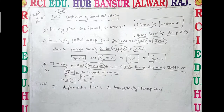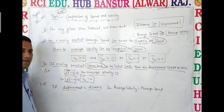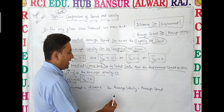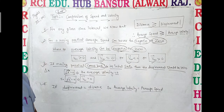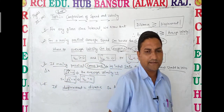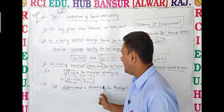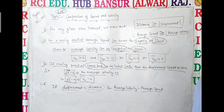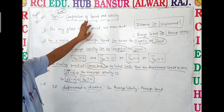Fourth point: if displacement is equal to distance, then average velocity and average speed will be equal. This occurs in straight-line motion, where displacement and distance are equal, and in this condition average velocity and average speed are equal. All these points are important and need to be clear.